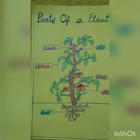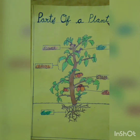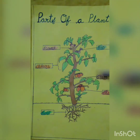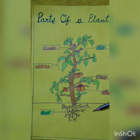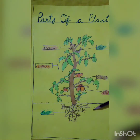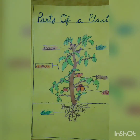So students, in this video we discussed the parts of a plant. Some parts found above the soil are known as the shoot system, and some parts found below the soil are known as the root system. We also discussed the functions of each plant part. I hope you liked this video and understood what I explained.